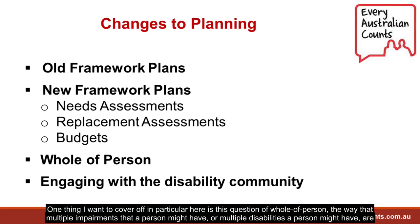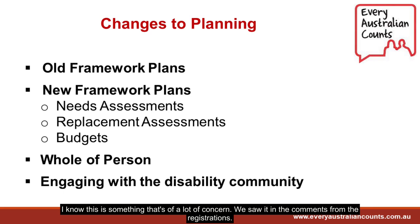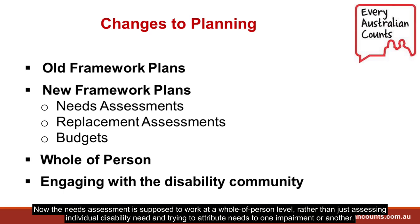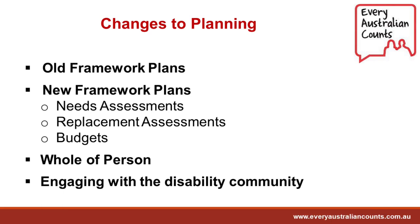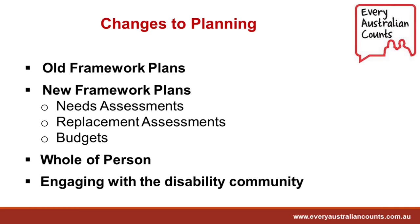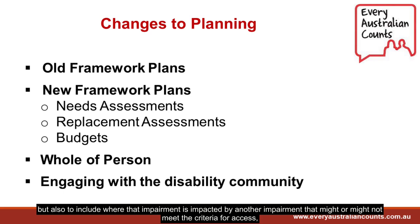One thing to cover in particular is this question of whole of person — the way that multiple impairments or multiple disabilities a person might have are going to be recognised and engaged with. The needs assessment is supposed to work at a whole of person level rather than just assessing individual disabilities and trying to attribute needs to one impairment or another. It's supposed to take into account a participant's support needs that arise from an impairment that met access to the scheme, but also to include where that impairment is impacted by another impairment that might compound or change the need from the first impairment.